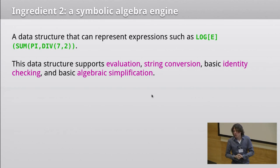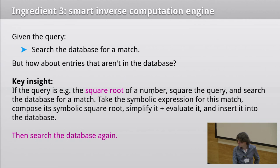The second ingredient is a symbolic algebra engine. You're going to need something that can represent symbolically an expression such as log of something or square root of something. The reason for that is that we want to be able to do something like basic algebraic simplification, because we probably don't want to evaluate things that add one and subtract one all the time. We want to eliminate as much as possible of the search space so that we don't waste time evaluating. And we also want string conversion and a bunch of other things. And of course, evaluation. We want to say, what does this particular expression evaluate to? And we get a floating point number out.